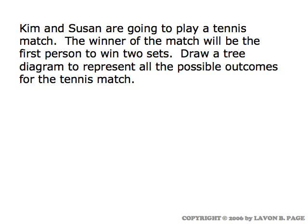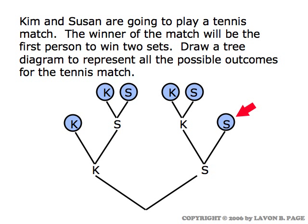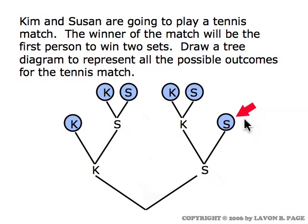Now we'll move to a tennis match, which is in some ways similar to the baseball series but in one very important way quite different. Kim and Susan are playing tennis; the winner will be the first person to win two sets. We start out by showing the two possibilities for the first set — either Kim or Susan wins — and same for the second set. The difference is that we don't know how many sets they will play, because if Kim wins the first and second set, the match is over; if Susan wins the first and second, the match is over. But in the two cases where one wins the first and the other wins the second, they have to play a third set. So for the tennis example, there are only six possible outcomes since in some instances they don't play a third set.